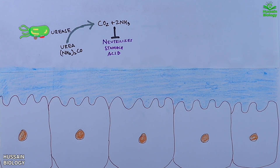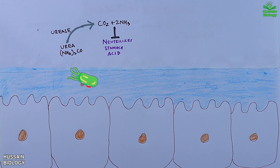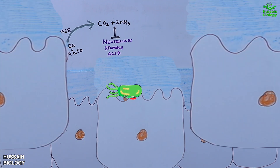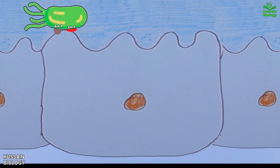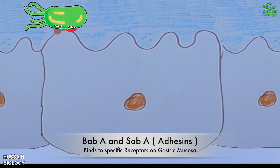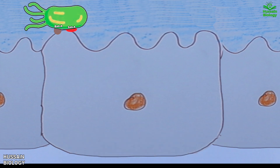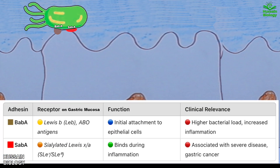After that, Helicobacter pylori uses its flagella to move and penetrates the mucus to reach the epithelial cells, as shown in the animation. On reaching the lining, it expresses two important molecules — BabA and SabA. Both of these molecules mediate the binding of H. pylori with epithelial cells. In this chart we have shown the receptors for these factors present on the epithelium.